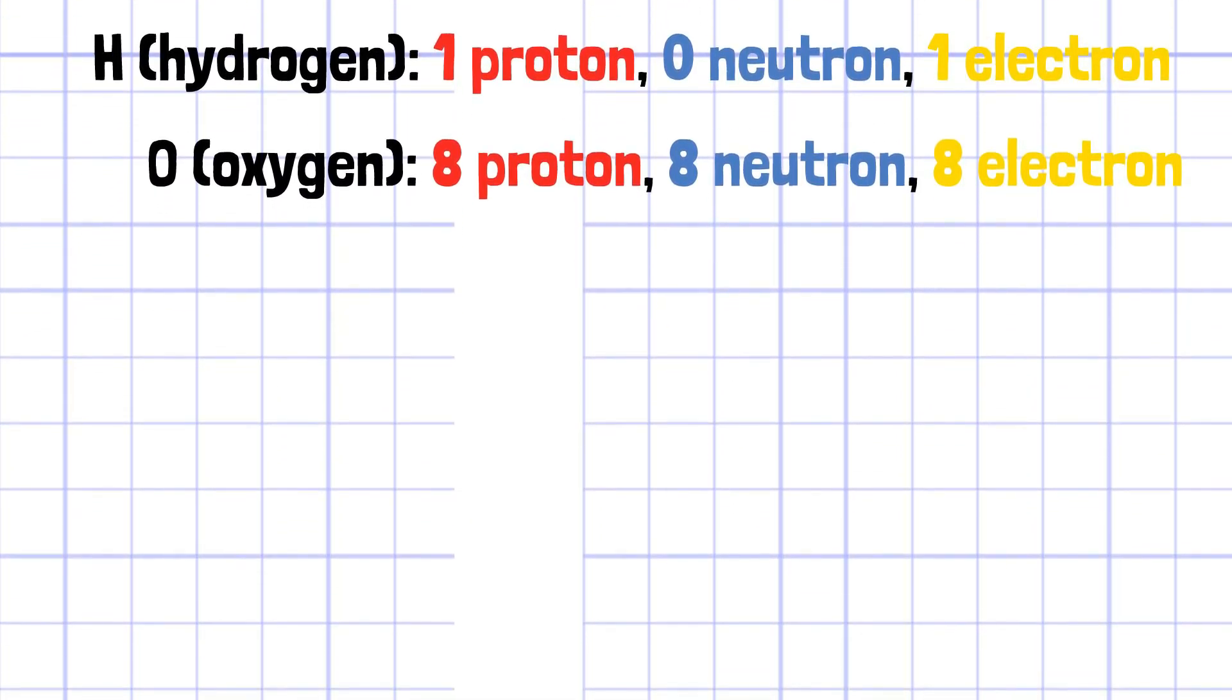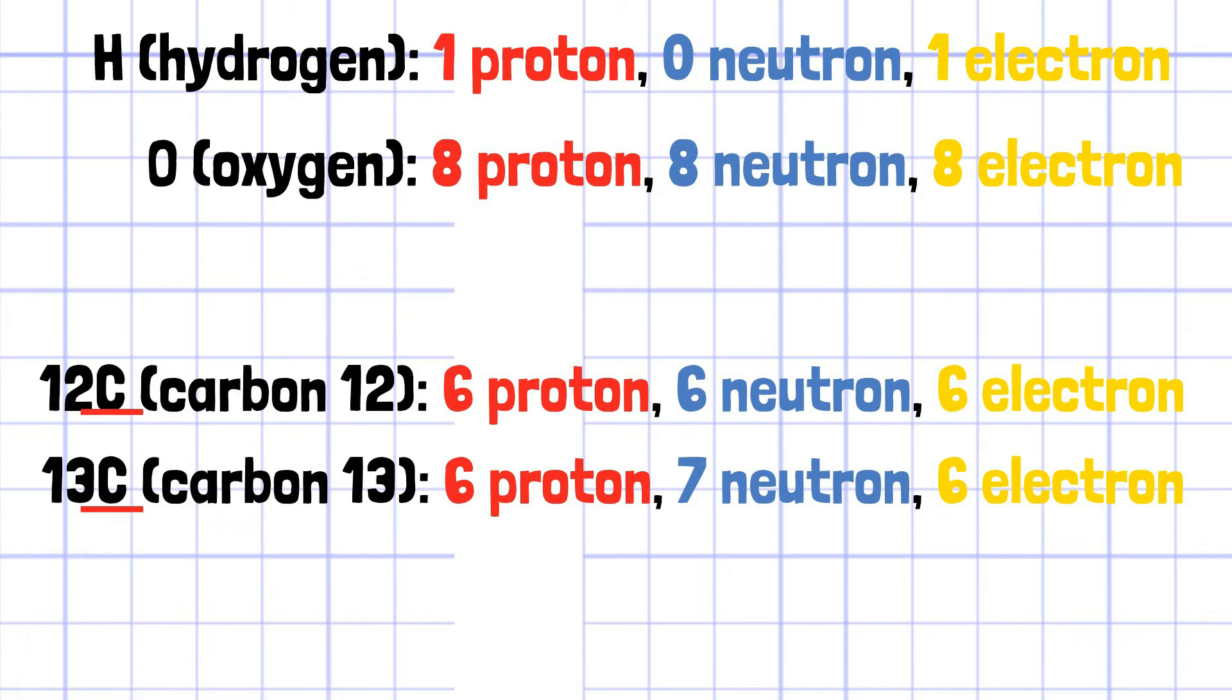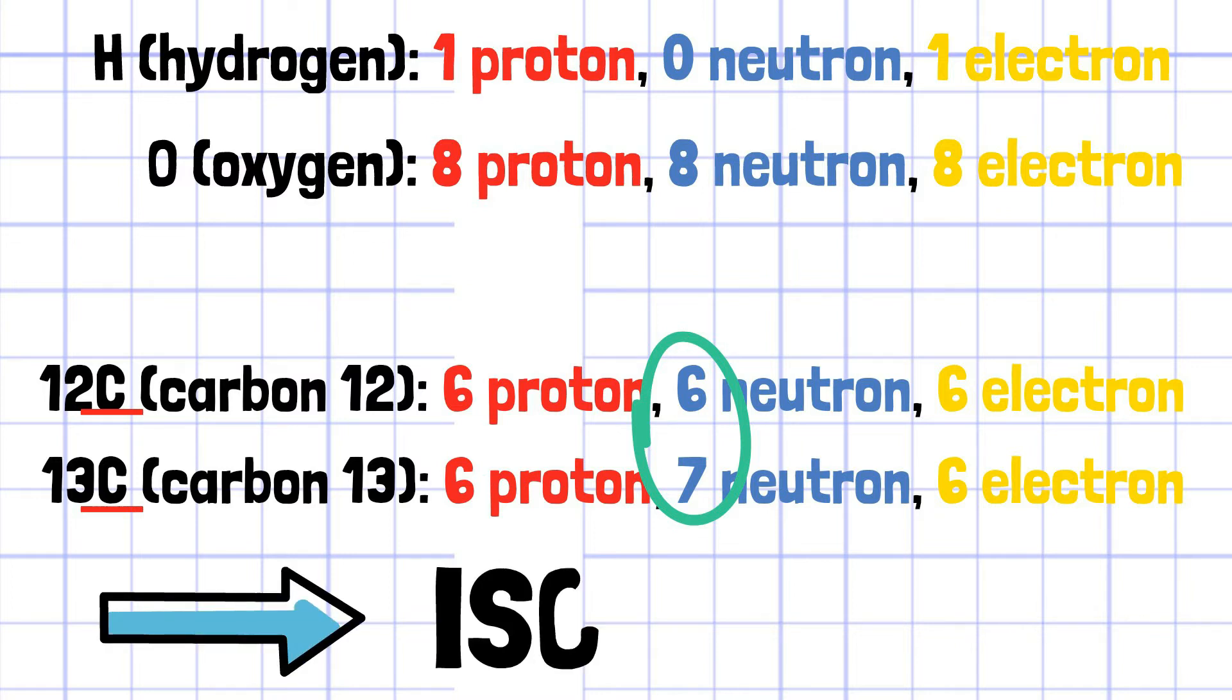However, despite sharing the same element's symbol, there are some variations that differ in the number of neutrons like carbon-12 and carbon-13. They are called isotopes.